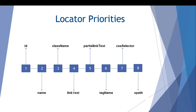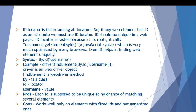ID comes first because it is unique, making it a very fast locator. Second comes Name, third is Class Name, fourth is Link Text — useful for hyperlinks. If the link text is very lengthy, we can go for Partial Link Text. Then we have Tag Name as sixth, CSS Selector as seventh, and XPath as the last.